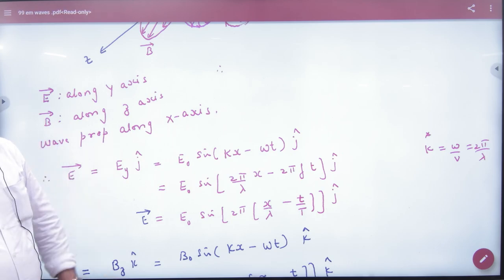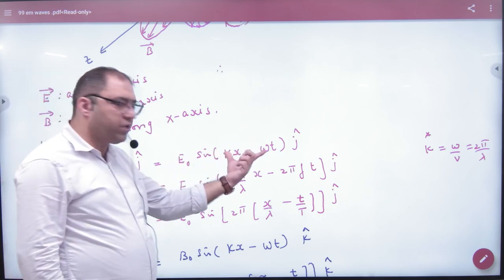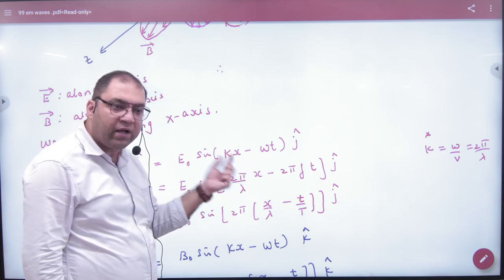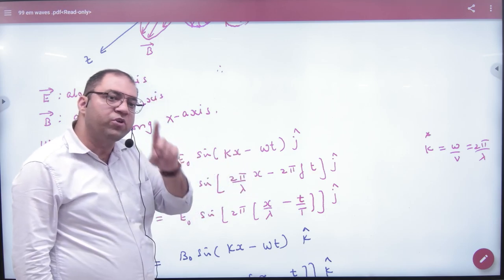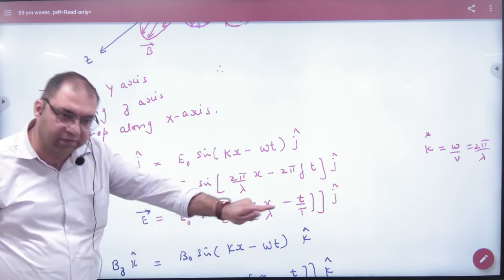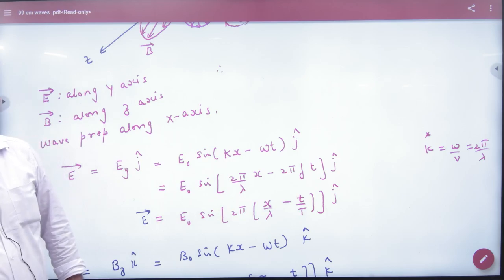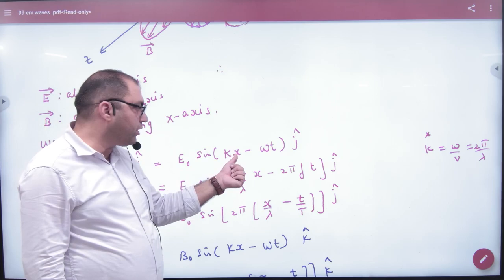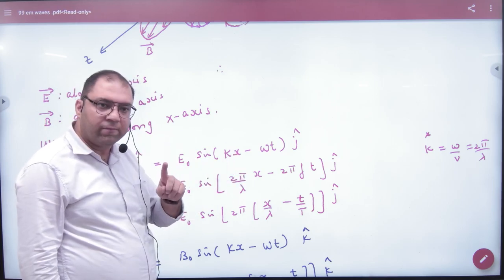That is also an important point. In this equation, whatever coefficient of k is - what coefficient of k is? x. This will give you wave propagation. Wave propagation is along x-axis. Where is the wave propagation? Where is x-axis? So if this is y or z, then it is z-axis.